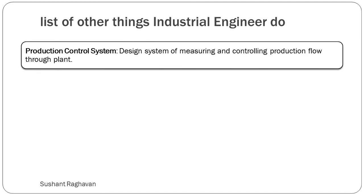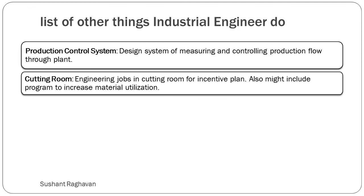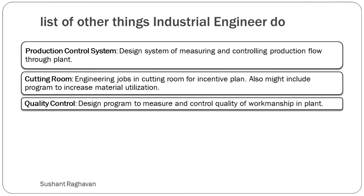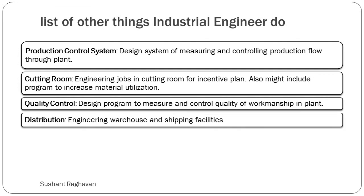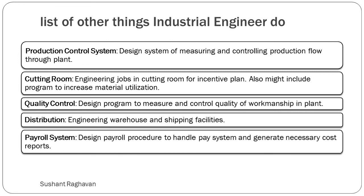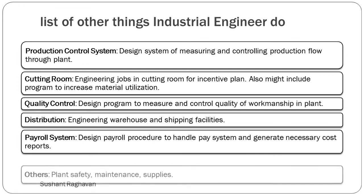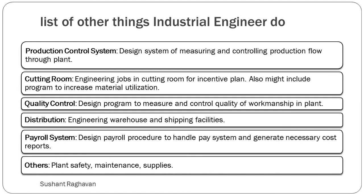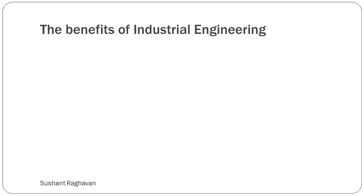Production control system involves designing a system for measuring and controlling production flow through the plant. Cutting room engineering covers incentive planning and may include programs to increase material utilization. Quality control involves designing a program to measure and control the quality of workmanship in the plant. Distribution covers engineering of warehouse and shipping facilities. Payroll system involves designing payroll procedures to handle the pay system and generate necessary cost reports. Other responsibilities include plant safety, maintenance, and supplies.